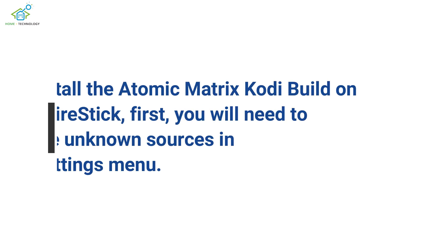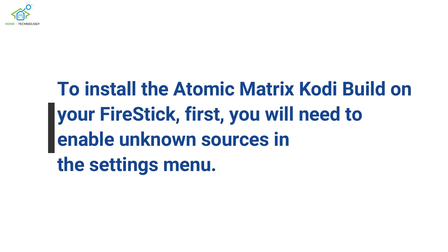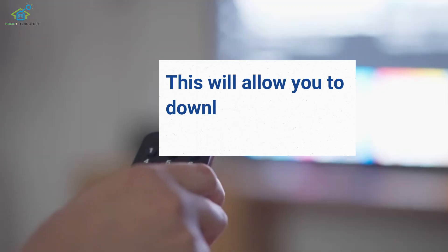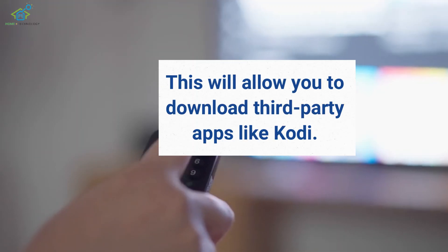To install the Atomic Matrix Kodi Build on your Fire Stick, first you will need to enable unknown sources in the Settings menu. This will allow you to download third-party apps like Kodi.